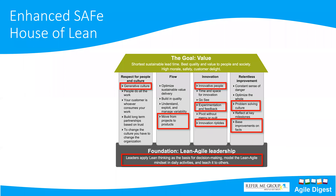The SAFe House of Lean has been updated with sub-items added under each pillar. Under 'Respect for People and Culture' they've added Generative Culture. Under 'Flow' they've added 'Move from Projects to Products.' Leadership at the foundation has also had some text updated. Additionally, SAFe 5.0 adds a 10th principle: 'Organize Around Value' — so SAFe will now have 10 principles instead of nine.